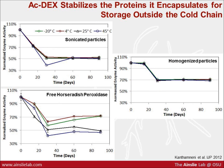Another advantage of ac-dex is that it stabilizes proteins across a broad range of temperatures. Dextrin has been known for years to be a cryoprotectant, and ac-dex behaves very similarly. We stored ac-dex particles encapsulating horseradish peroxidase — an enzyme — over four different temperature conditions for 90 days. Although there is a decrease in enzyme activity comparable to the free protein, no matter what temperature the particles are stored at, they essentially have the same activity. Basically ac-dex stabilizes proteins it encapsulates, and it can be used to store these proteins outside the cold chain.